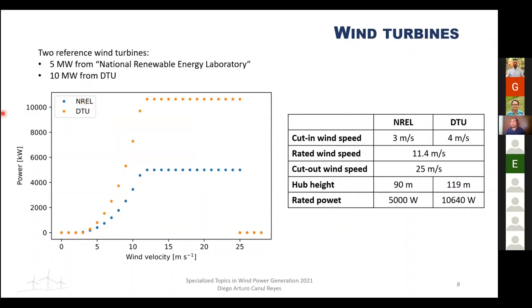Two reference wind turbines were selected: the 5 MW from NREL and the 10 MW from DTU. These represent current offshore technology (5 MW) and near-future technology (10 MW). Both have a rated wind speed of 11.4 m/s and cut-out speed of 25 m/s, with hub heights of 90 and 120 meters respectively. The main difference is the cut-in speed: 3 m/s for the NREL and 4 m/s for the DTU. Their power curves are similar, so similar capacity factors are expected.